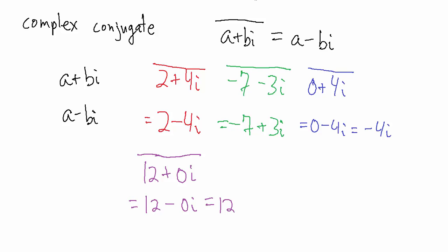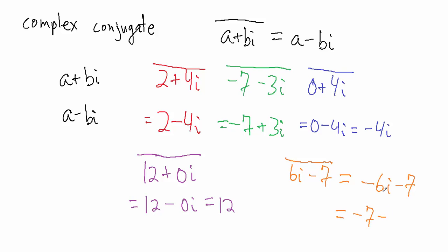What if the number is not in standard form? You still do the same thing. So let's say something like 6i minus 7. That's not really in standard form, because standard form should have the real part first and then the imaginary part with the i second. But we still do the same thing: just change the sign of the imaginary part. So the complex conjugate of 6i minus 7 is going to be negative 6i minus 7. The imaginary part here is the 6. We should give our answer in standard form, so negative 6i minus 7 in standard form is negative 7 minus 6i.